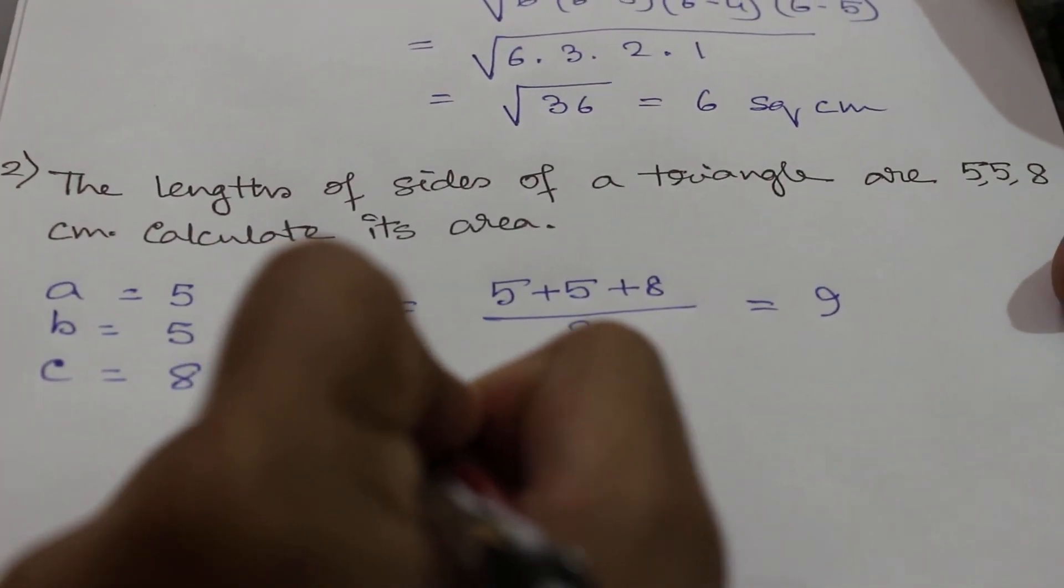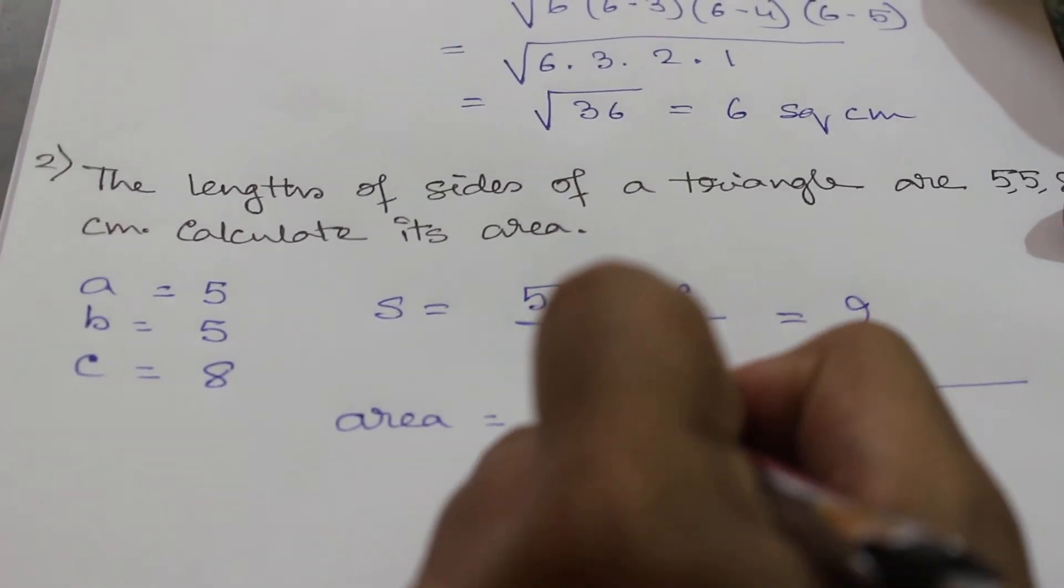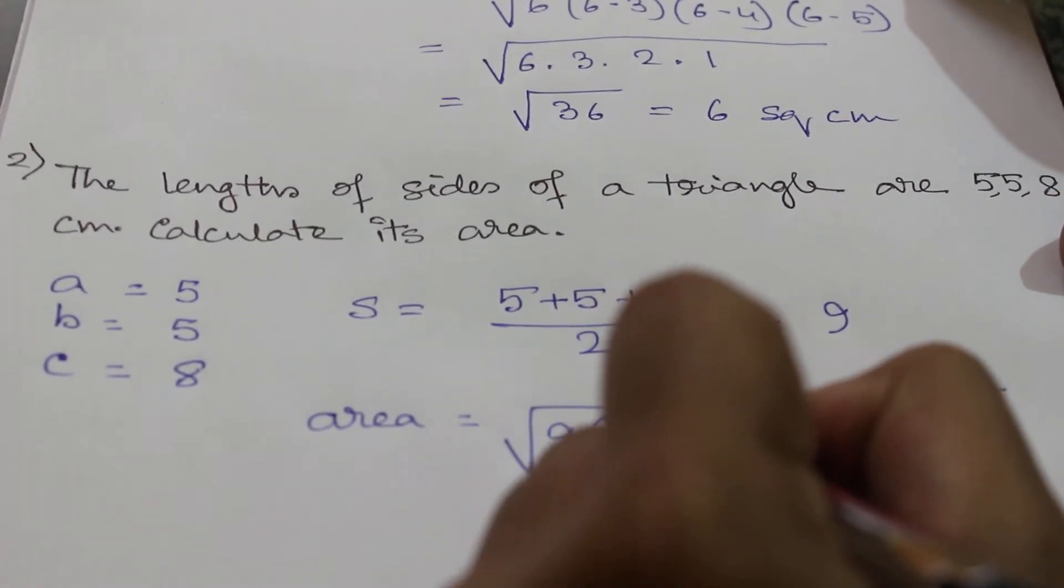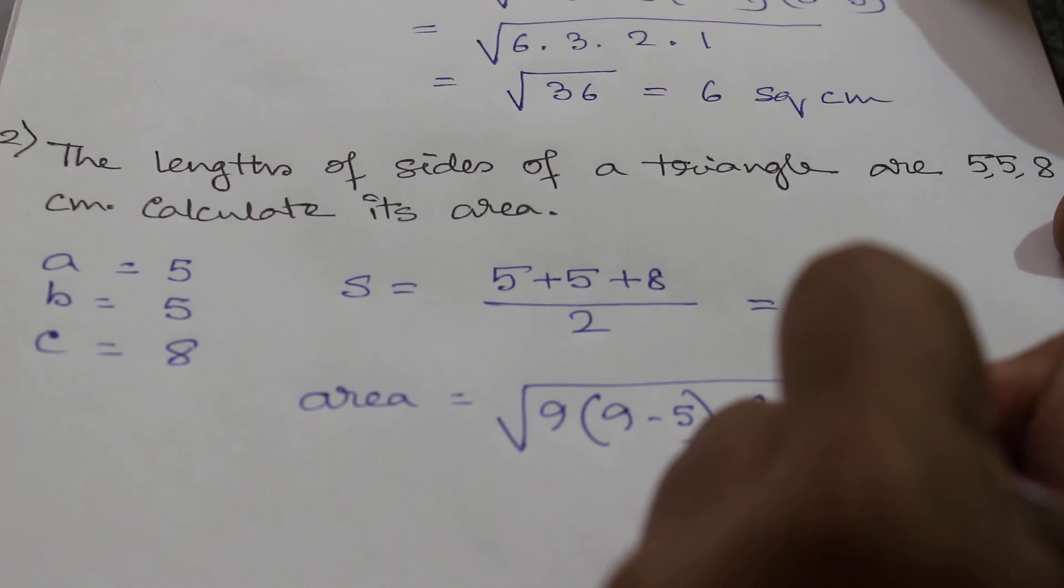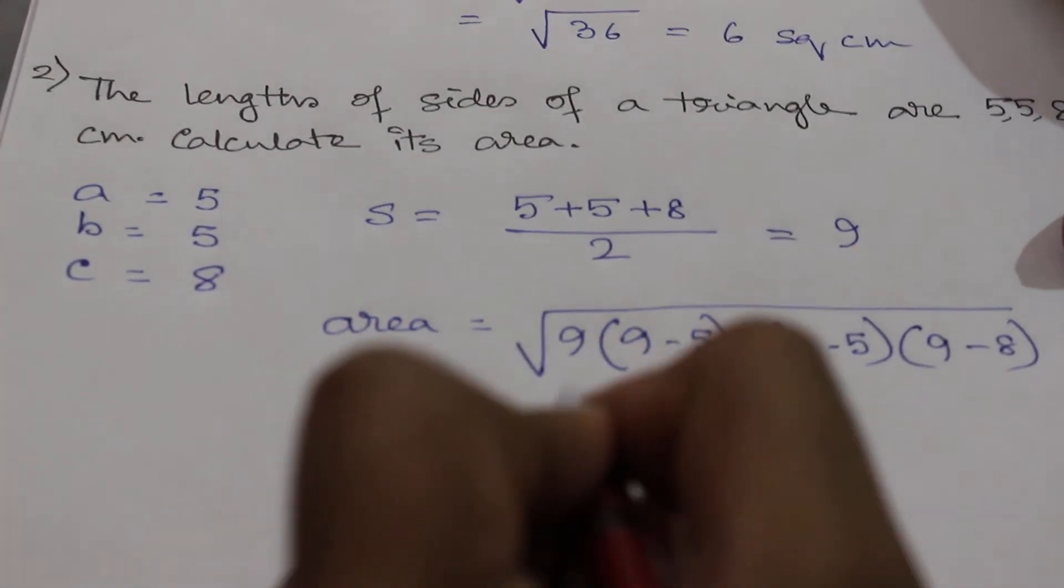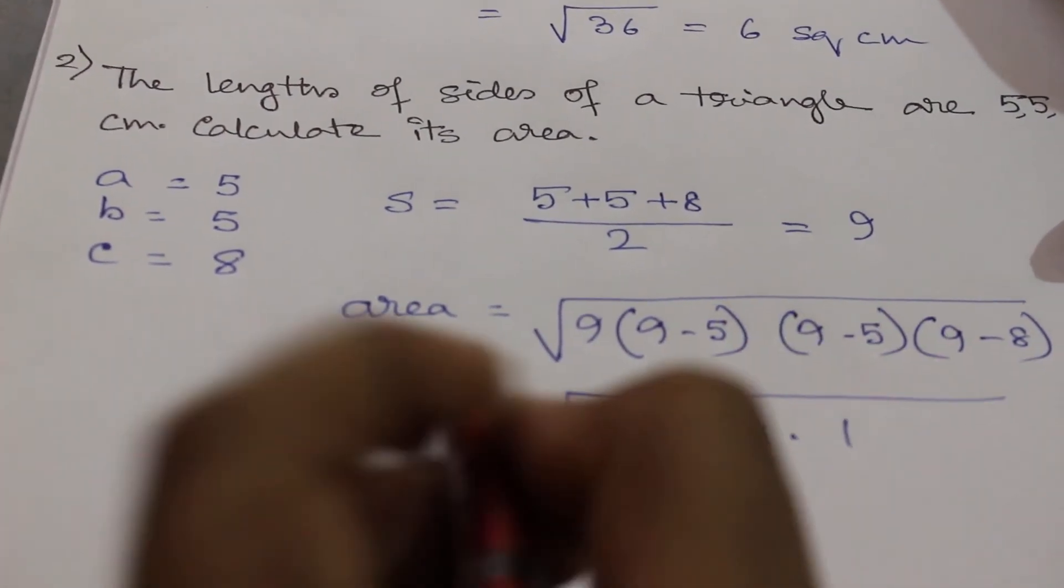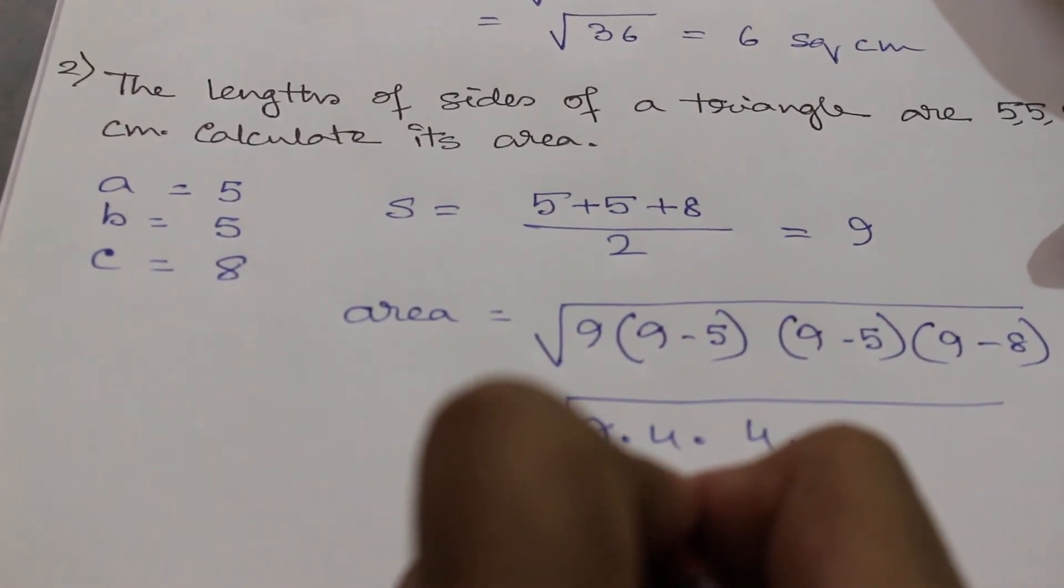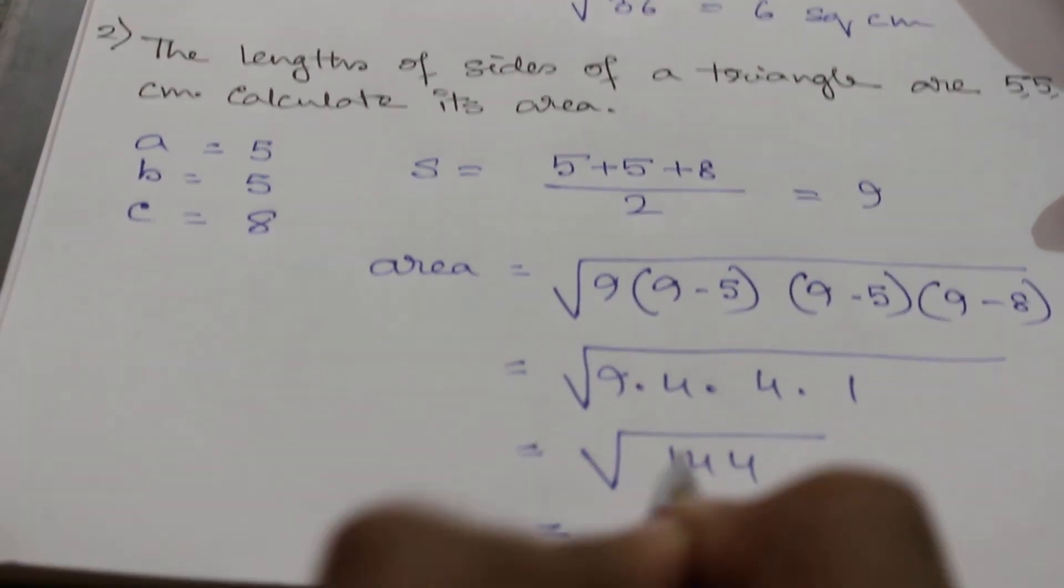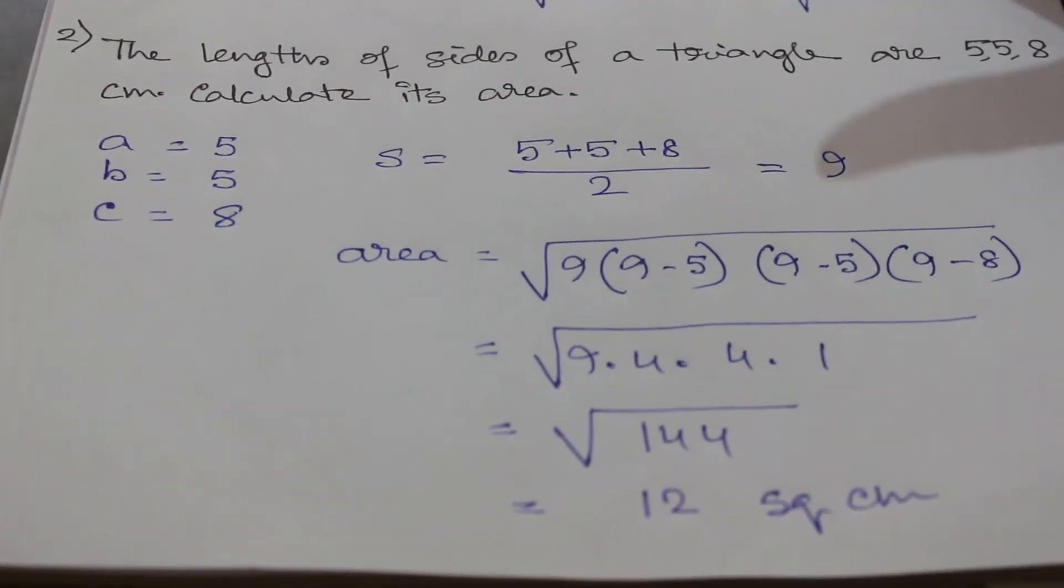According to Heron's formula, area equals √[s(s-a)(s-b)(s-c)] = √[9(9-5)(9-5)(9-8)] = √(9×4×4×1) = √144 = 12 square centimeters.